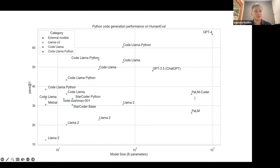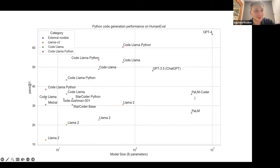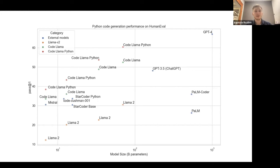Looking at Python code generation specifically, there's a pretty big gap between Llama 2 (the orange dots) and CodeLlama (the green dots). There is also still a gap between CodeLlama and CodeLlama Python, which was further fine-tuned just for Python — and that's despite CodeLlama having already seen all the Python data used for CodeLlama Python more than once.